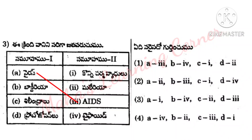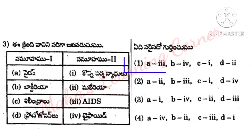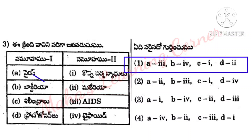Disease-organism matching: 1. HIV virus causes AIDS disease. 2. Bacteria — Typhoid; Salmonella Typhi and bacteria cause Typhoid. 3. Protozoan — malaria; Plasmodium, a protozoan, causes malaria. So Option 1 is the correct answer: A3, B4, C1, D2.